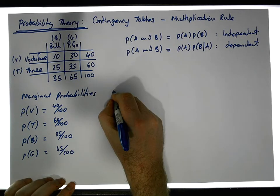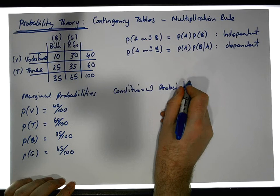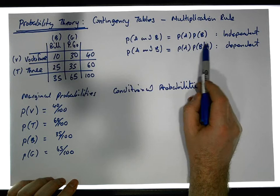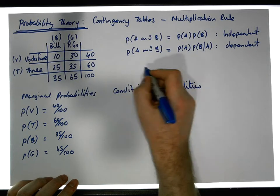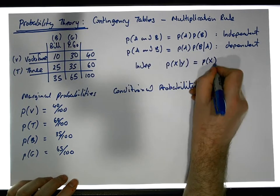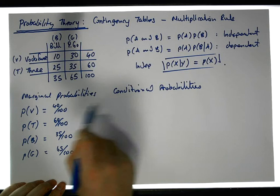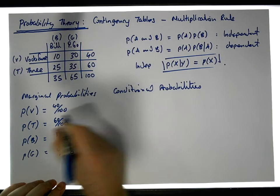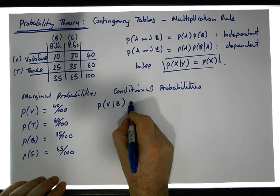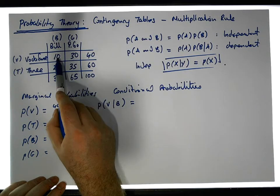Now let's look at the conditional probabilities, because I really want to know whether I'm dealing with independent or dependent events. The rule says that if two events are independent, then the probability of X given Y equals simply the probability of X. So I want to test whether these events are independent. Let's calculate the probability of a Vodafone customer given that it's a bill pay customer. We know they're a bill pay customer — there are 35 of them — and I have 10 Vodafone among them, so it's 10 out of 35.